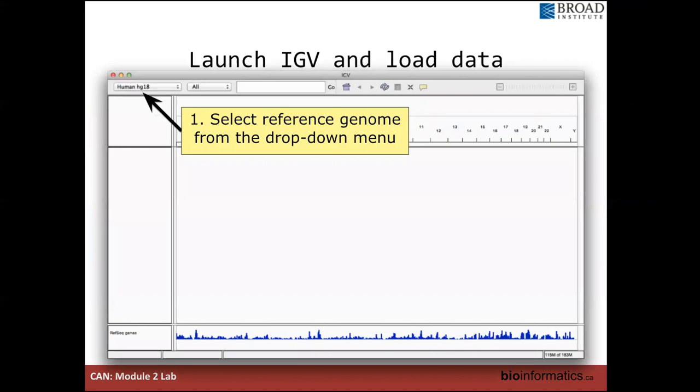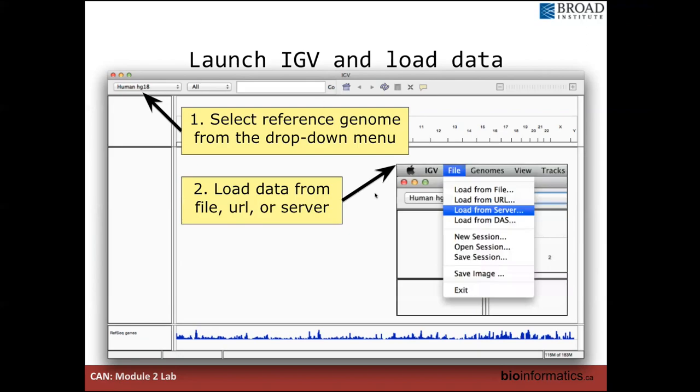So once you launch IGV, you should see a screen that looks like this. The first thing you want to do is make sure you have the correct reference genome selected. So this is a pretty old screenshot here. At the very least, you should be using HG19 if you're working with humans. If you don't have the correct reference genome, everything is going to look very wrong. Your alignments are going to look terrible. And from here, you can then load your data, again, as I said, from a file on your computer or from a URL or server.